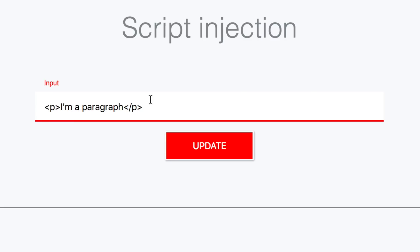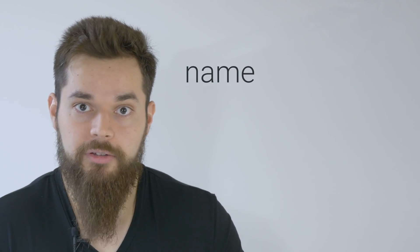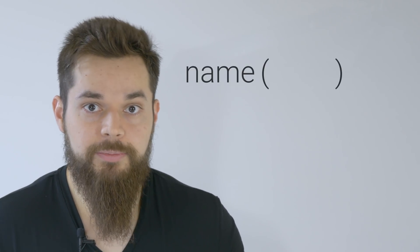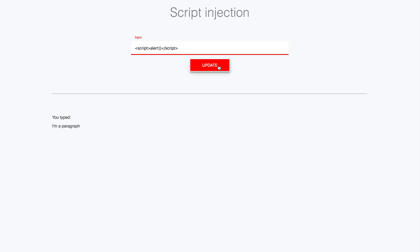Go ahead and inject script tags this time. Start with your opening script tag, followed by your closing script tag. Now for the content that goes inside — this, my friends, is where we enter the wonderful world of JavaScript. Performing actions in JavaScript is like any other programming language where you just call functions by typing the name followed by parentheses. Anything that goes inside the parentheses gets passed as data or arguments that the function can use. Try calling the alert function within your script tags — type in alert followed by parentheses, then click the update button and watch your script execute.